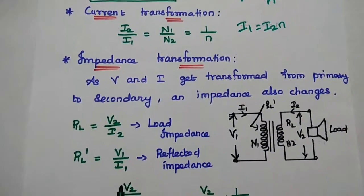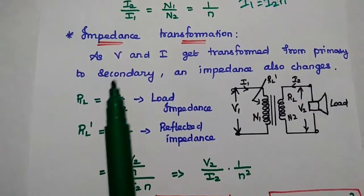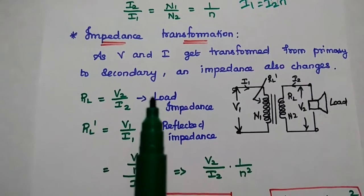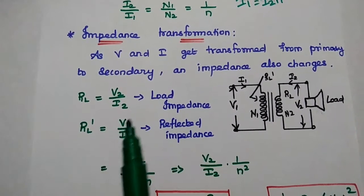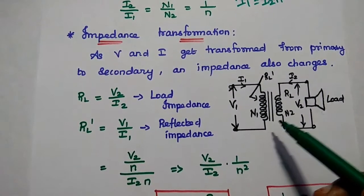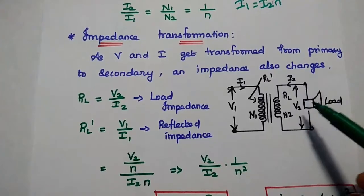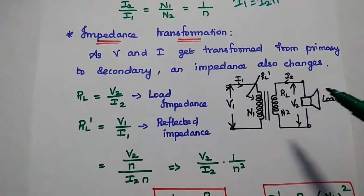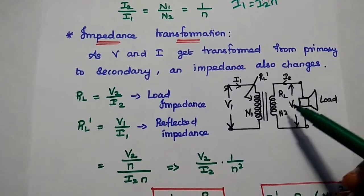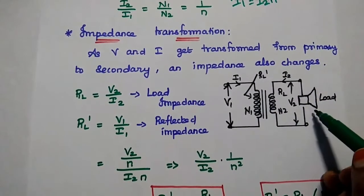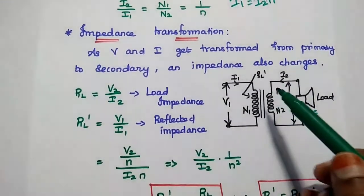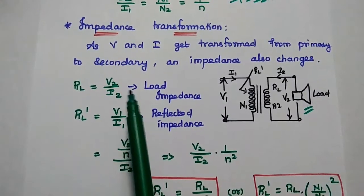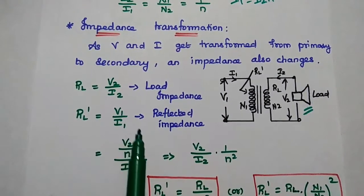The last one is impedance transformation. Here, voltage as well as current both get transformed from primary to secondary winding, so the impedance can also be changed. Here we can consider two impedances. One is RL, that is the actual load impedance. The other one is reflected impedance. RL is directly connected to the secondary winding — it can be a loudspeaker. RL dash is the reflected impedance with respect to the secondary winding. RL is equal to V2 by I2. RL dash is equal to V1 by I1.